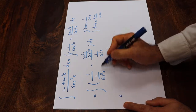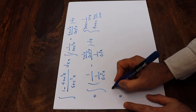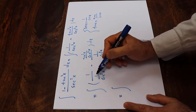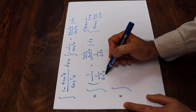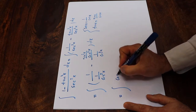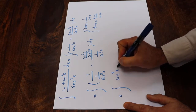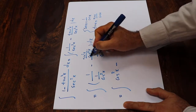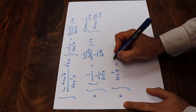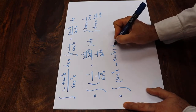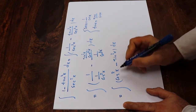So now you can rewrite this integral as: 1 divided by (1 divided by cosine square x) gives cosine square x, minus — here the cosine cancels — giving sine square x dx.